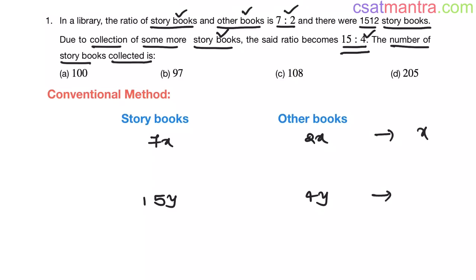Here x and here y. Now, if you observe, we have collected only storybooks, not other books. That means the quantity of other books remains unchanged. Now, to make the other books quantity the same, I am multiplying this ratio by 2.